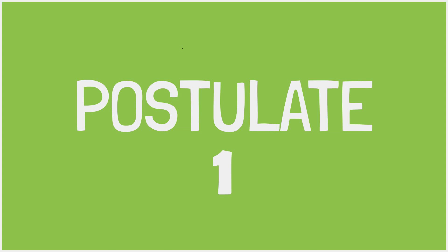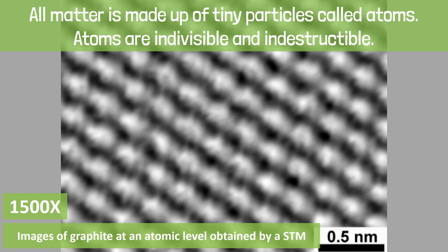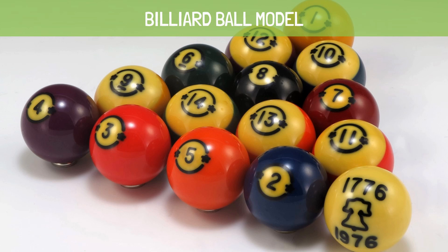Postulate number one: all matter is made up of tiny particles called atoms. Atoms are indivisible and indestructible. Here we have an image of graphite at an atomic level obtained by a scanning tunneling microscope. The size of these atoms are in a few nanometers. We need to magnify it about 1500 times to see them. Dalton's model proposed that atoms are much like billiard balls — both can't be created, divided or destroyed.